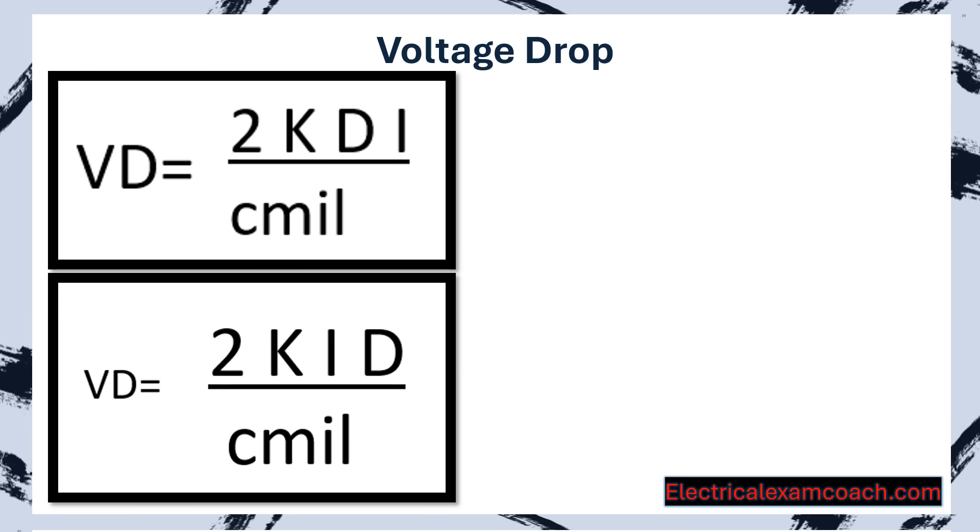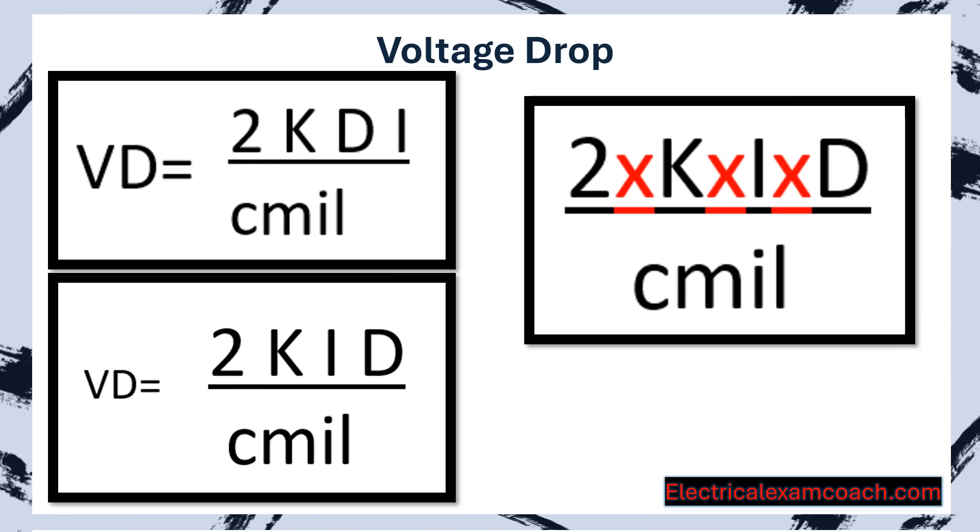I do it like this: 2KID over cmil. Easy to remember and easy to plug in. What this is, just like previously in the program, is implied multiplication. So it's going to be 2 multiplied by K multiplied by I multiplied by D divided by cmils. Now let's learn what each one of these individual pieces mean.